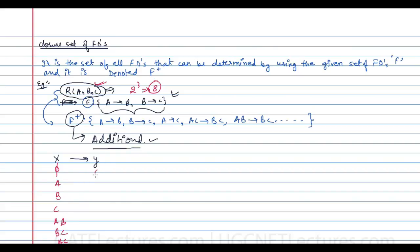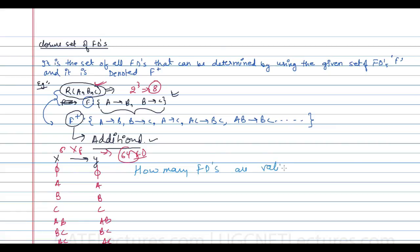With 8 subsets on each side, there are 8 × 8 = 64 different possible functional dependencies total. Out of these 64, we need to determine how many are actually valid. To find the valid functional dependencies, we use the given set of functional dependencies F = {A→B, B→C} and apply closure calculations.